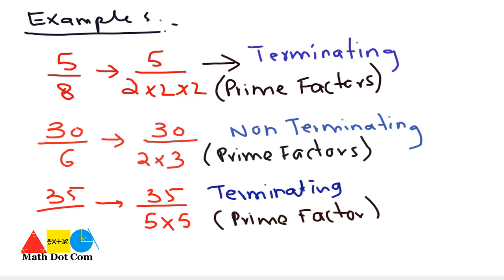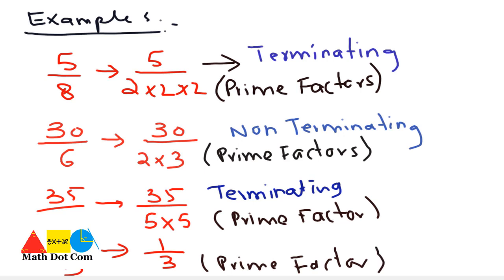One more example: 1 over 3. As we have already discussed, it is non-terminating. Let's verify through the rule: 3 is a prime factor, and since it is not 2 or 5, it is clearly non-terminating. This was all about how you can identify a given rational number as terminating or non-terminating without division.